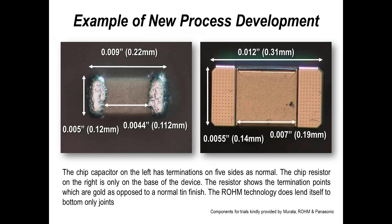The next generation of components, going down below 01005 — I show you a couple of packages here. We've got a chip capacitor with terminations on the ends and all the way around the package, and then a Roam device on the right-hand side with terminations only on the bottom. These packages use silicon technology as opposed to ceramic technology used for resistors and capacitors. With ceramic technology the tolerance on terminations is much smaller because of the manufacturing technique, allowing very tight control of design rules. You're only soldering to the underside, so it takes up the minimum room on your PCB.